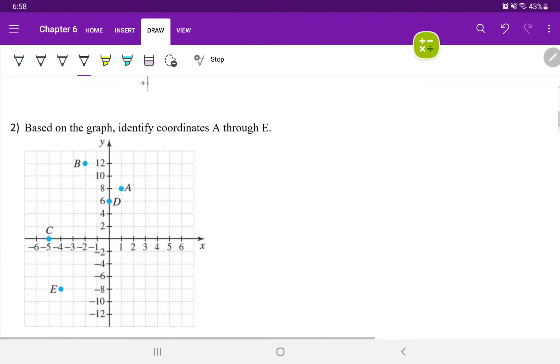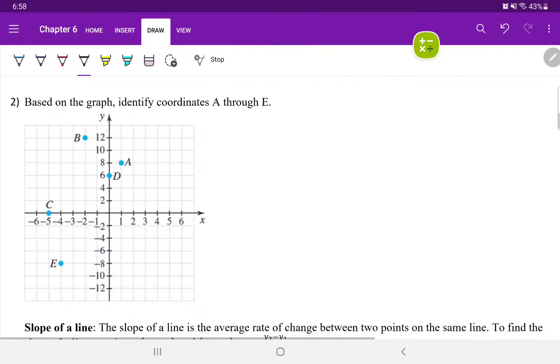B says, based on the graph, identify coordinates A through E. Coordinate A. The x is one. The y is eight. So that's the coordinate of (1, 8). The point of (1, 8).